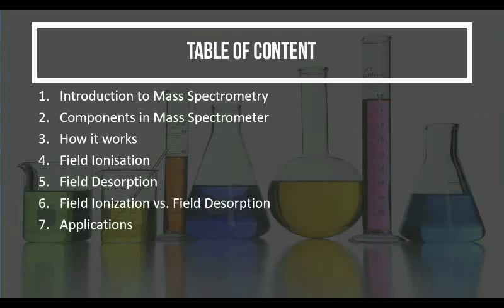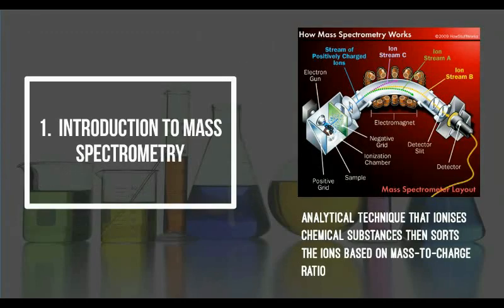We'll start by looking at what is mass spectrometry. As a brief introduction, mass spectrometry is the analytical technique that ionizes chemical substances and sorts the ions based on mass-to-charge ratio. The mass spectrometer is an instrument used for measuring unknown substances or molecules through the mass of the ions.